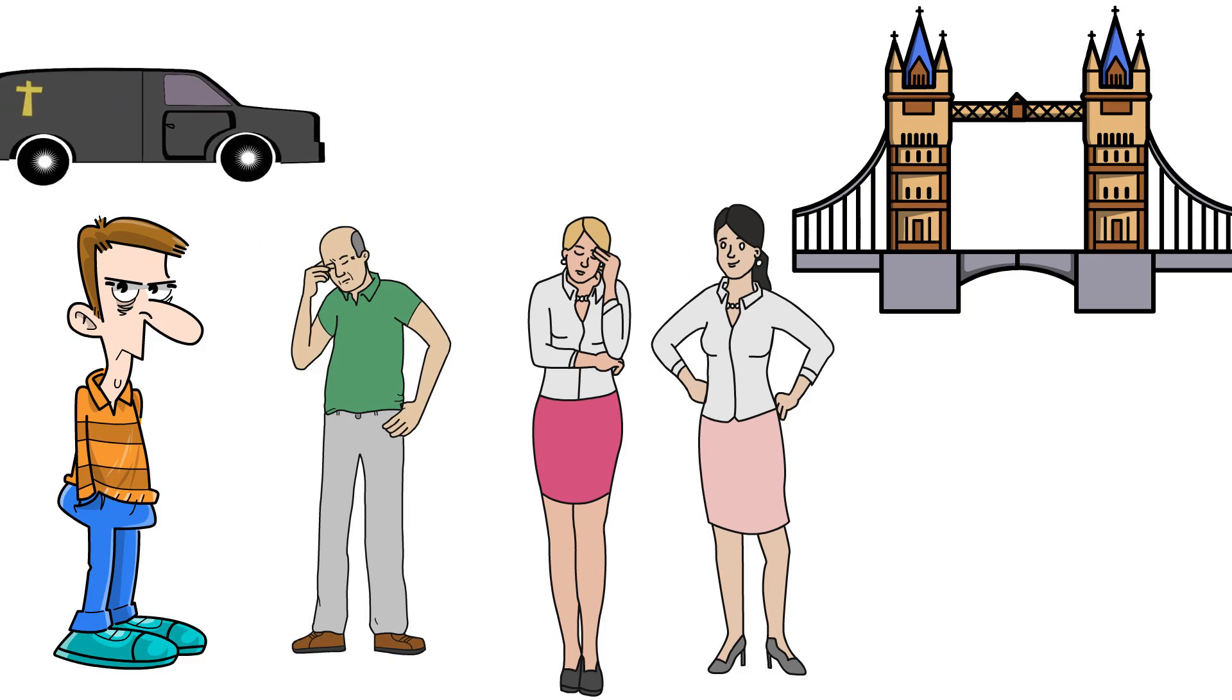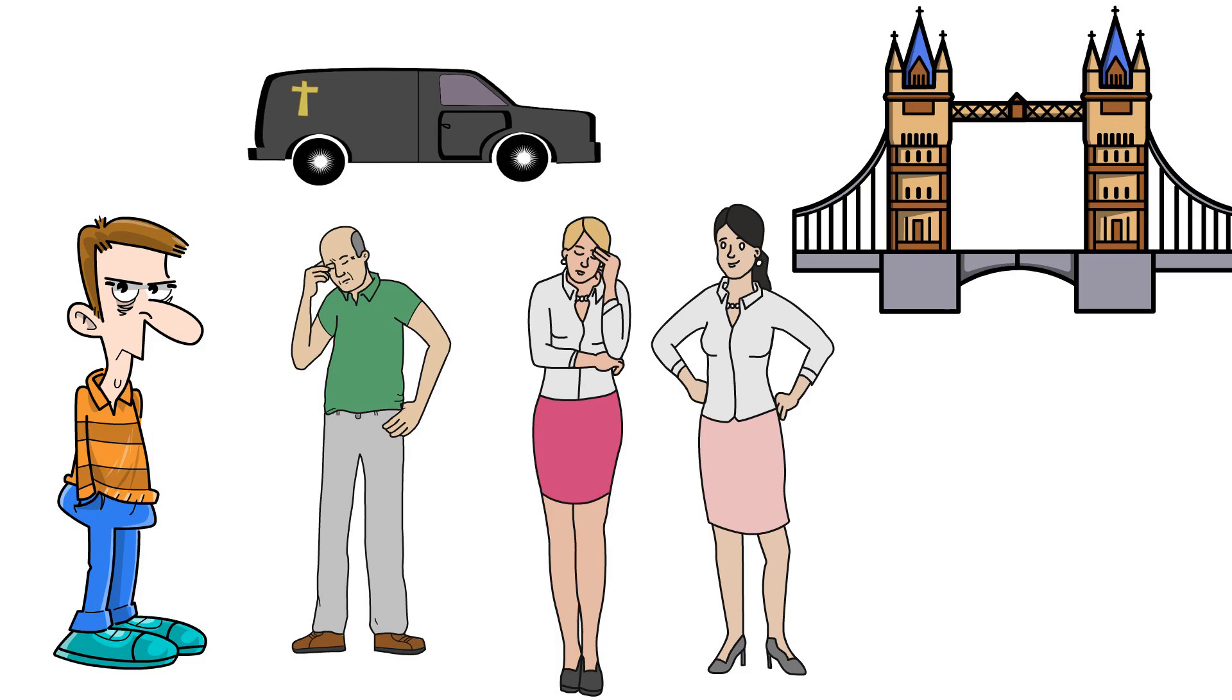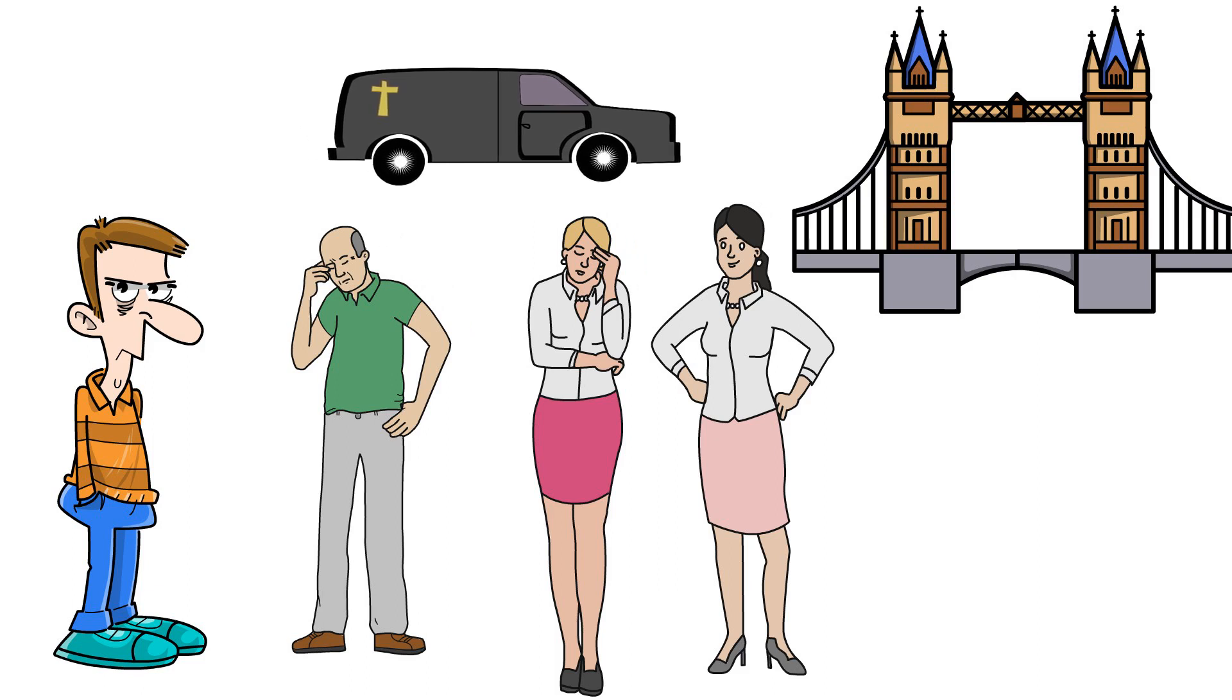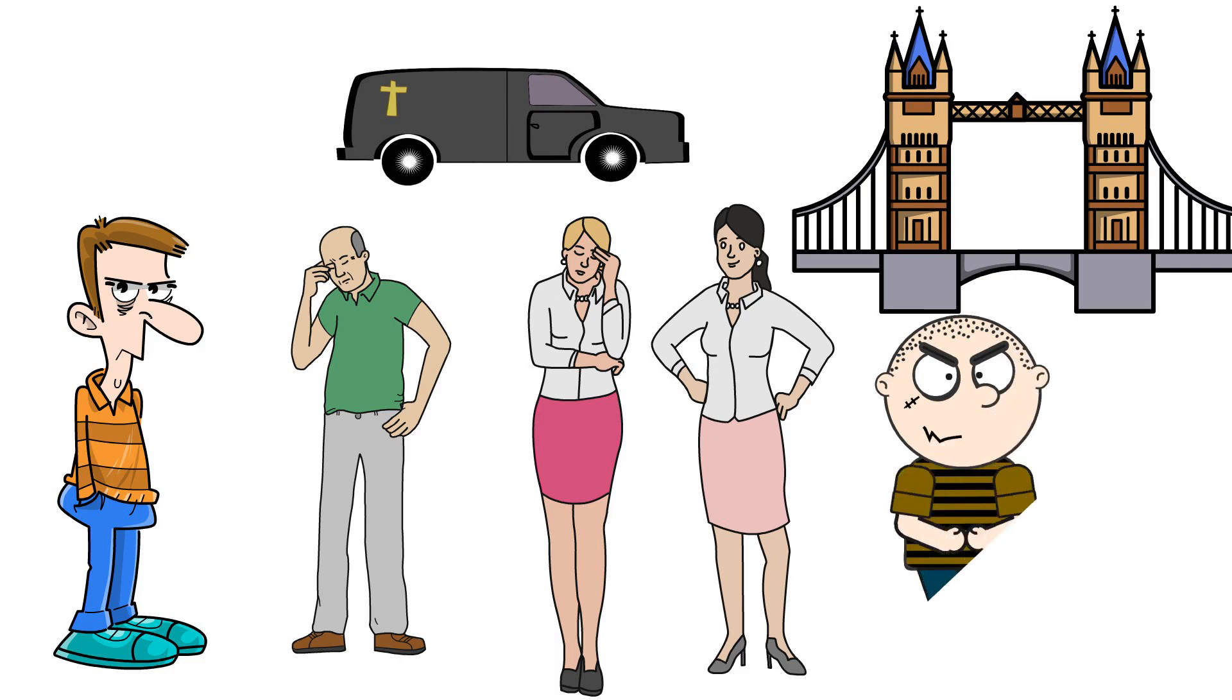Noah's relationship with the undertaker Mr. Sowerberry has gotten so bad that he stole money from him and fled to London with Charlotte, and he joins Fagin's gang under the name Morris Bolter. Noah is sent to spy on Nancy.